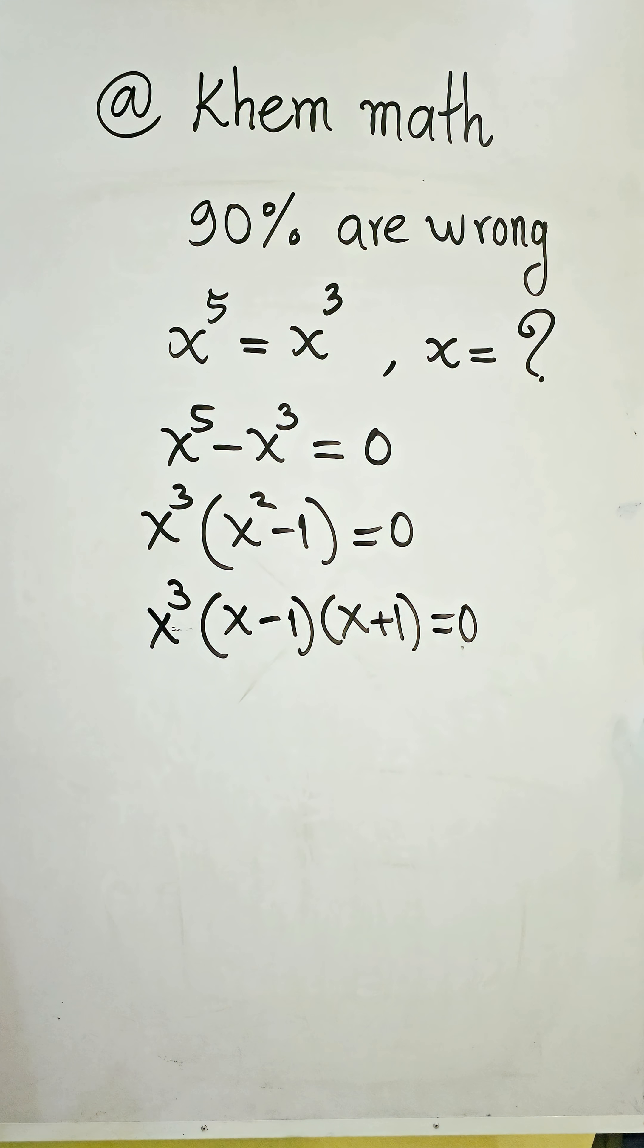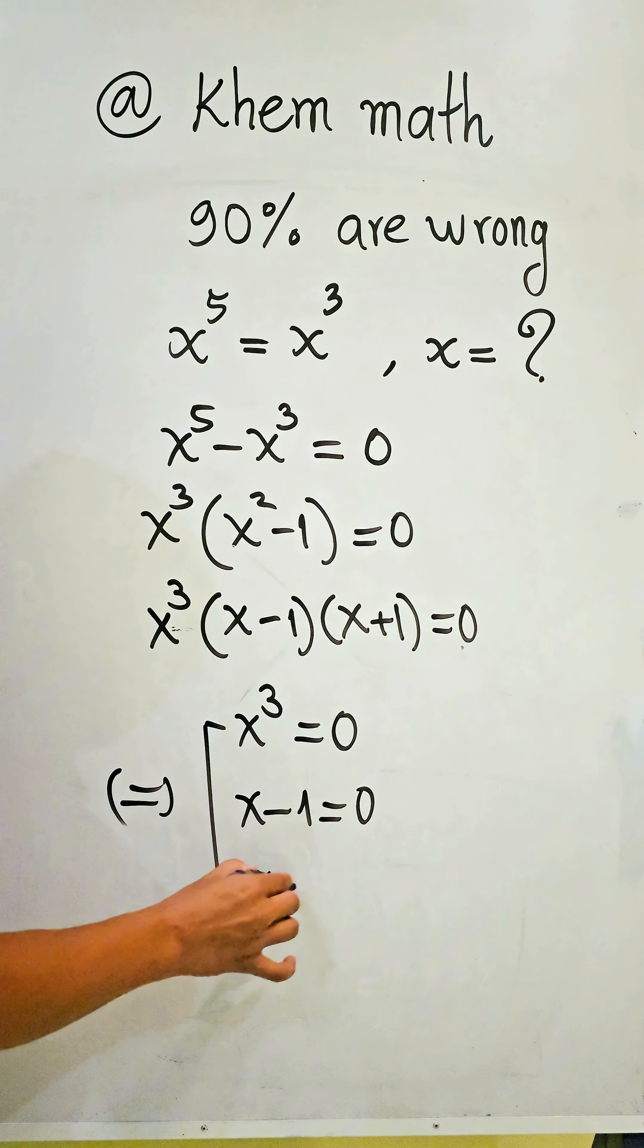This verifies our formula: a^2 minus b^2 equals a minus b times a plus b. So here we get x^3 equals zero, and here x minus 1 equals zero, and here x plus 1 equals zero.